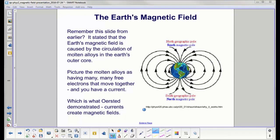We're now in a position to explain an earlier slide. The north geographic pole of the earth is here, and that's a south magnetic pole where magnetic field lines enter. Earth's magnetic field is caused by the circulation of molten alloys in the earth's outer core. Picture the molten alloys as having many free electrons that move together. That's a current - charge per unit time. That's what Ørsted demonstrated. Currents create magnetic fields.